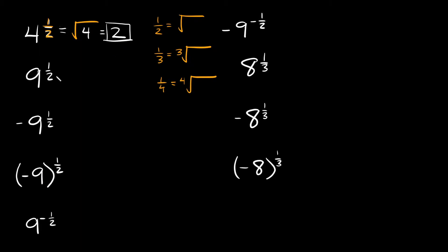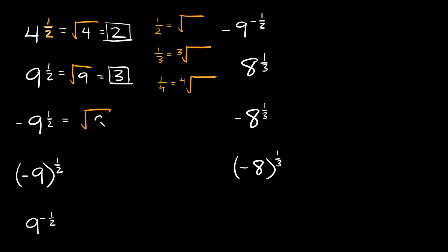Now let's throw some negative signs in here. With negative 9 raised to the one-half power, the negative sign is not inside parentheses, so the exponent only applies to the 9. So this is the square root of 9, which is 3, and then you just carry the negative sign on the outside — giving you negative 3. But when the negative sign is inside parentheses, like (-9)^(1/2), the exponent applies to everything inside, giving you the square root of negative 9, which does not exist — you can't take the square root of a negative number.